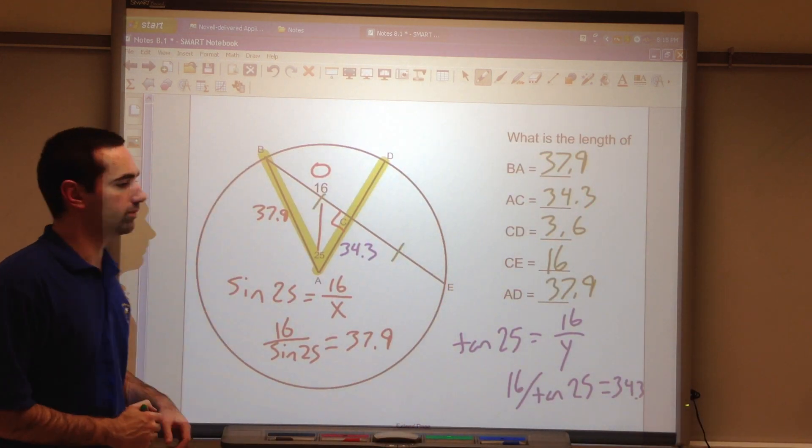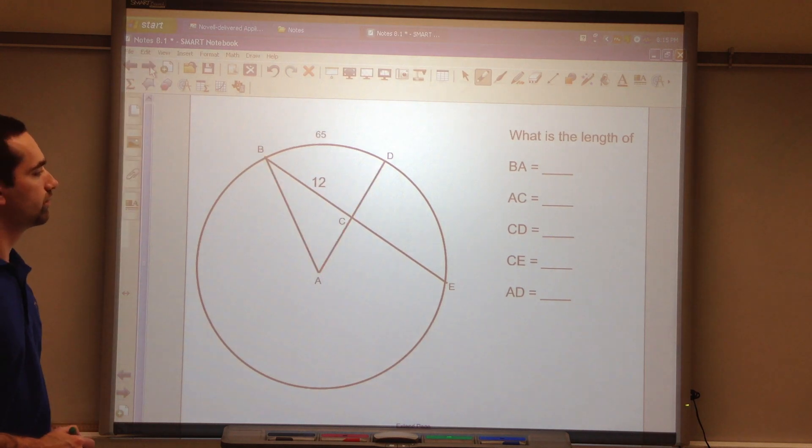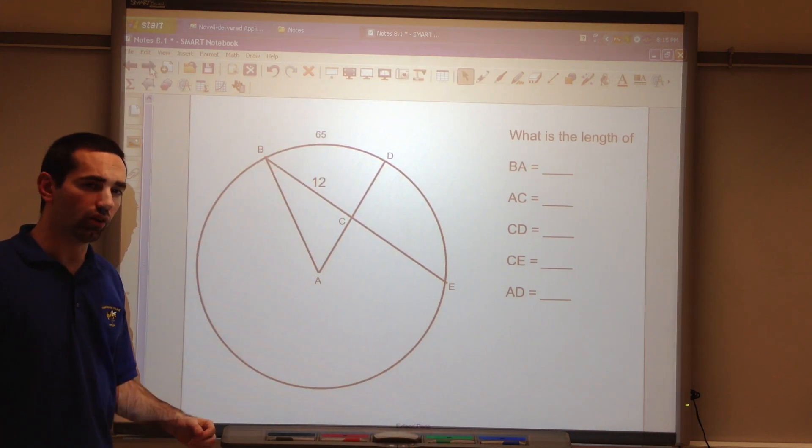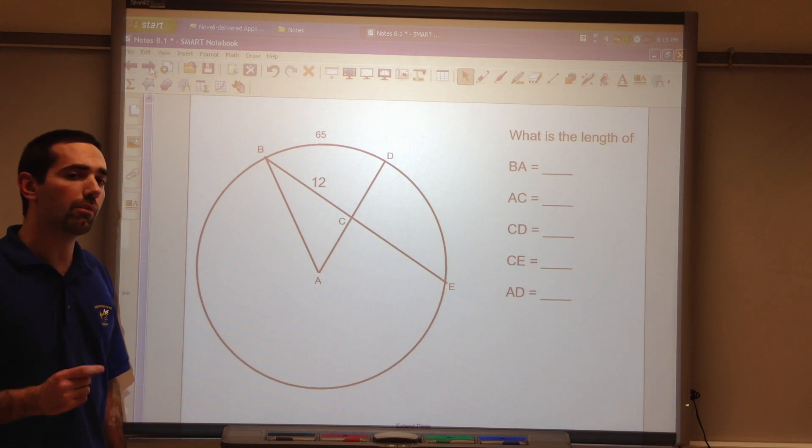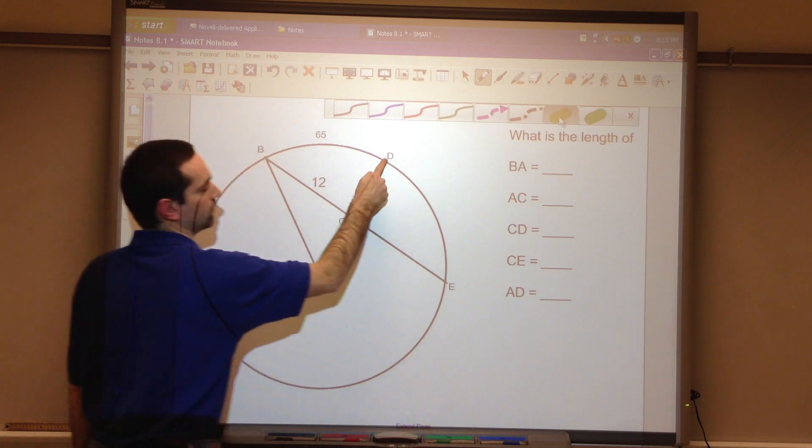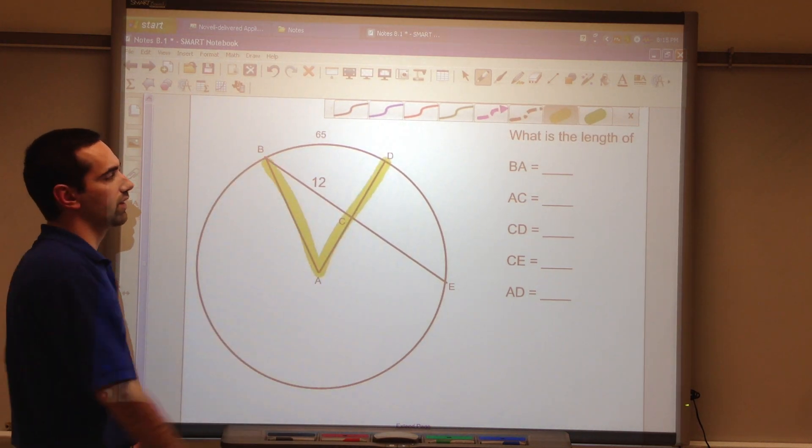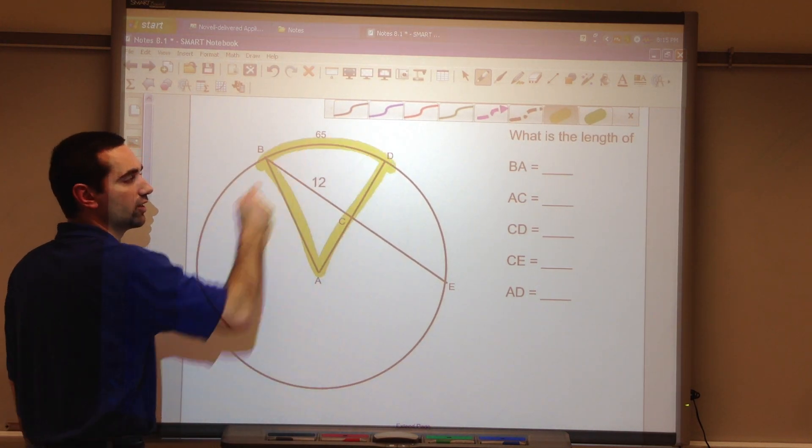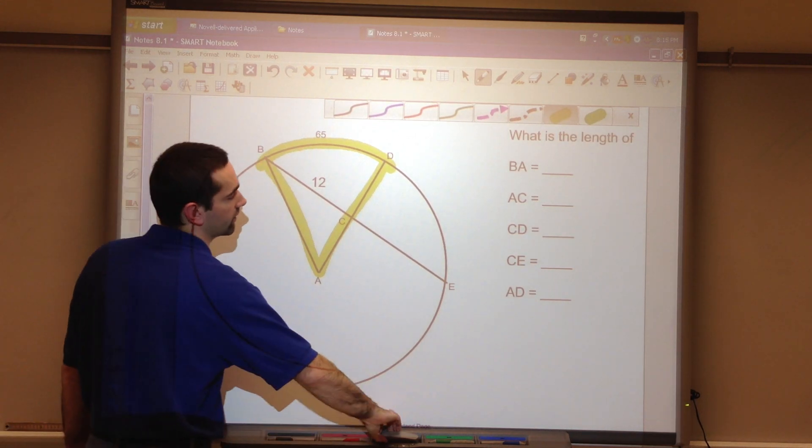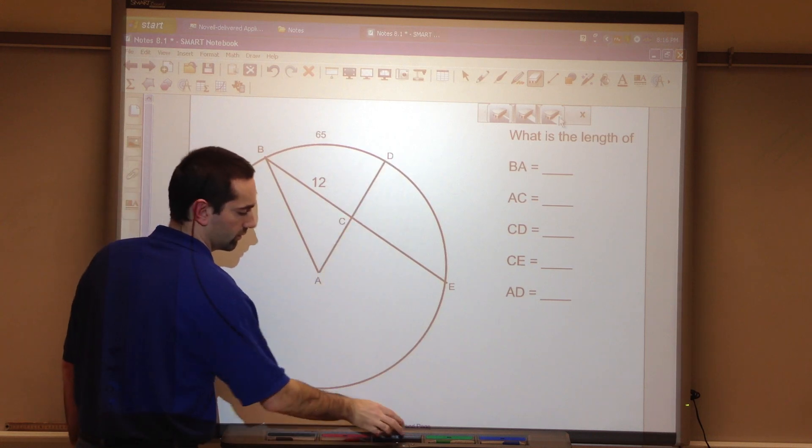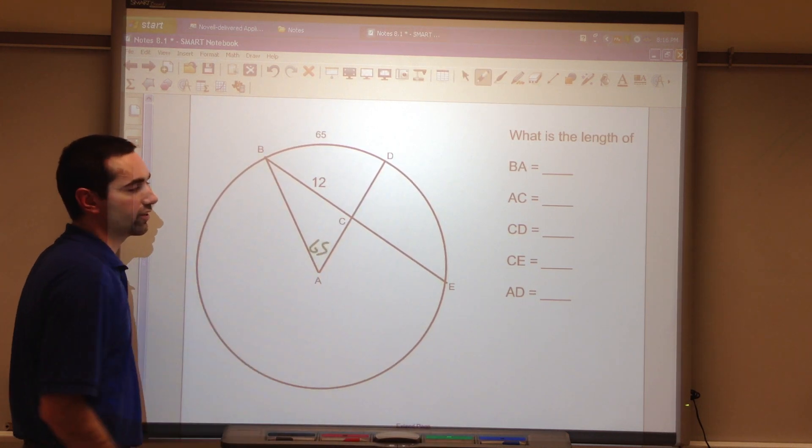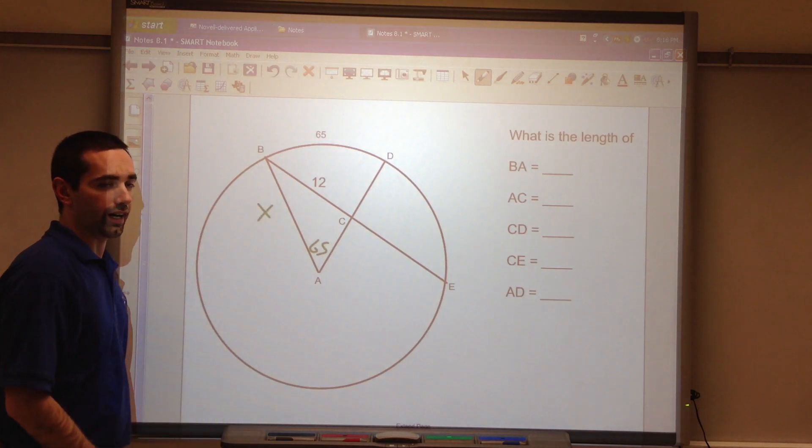Let's look at another problem. Here, I don't have an angle. But we should remember the properties of our circles. This is a central angle. Thus, it's congruent to the measure of the arc, which is 65. So this is 65 degrees. Now we can do trig.